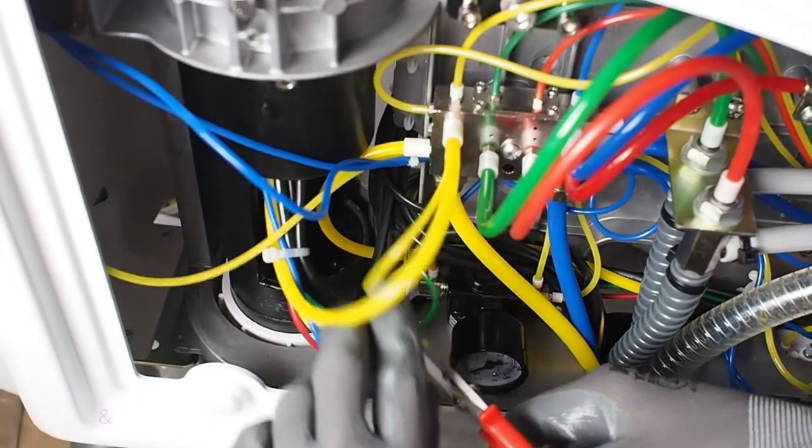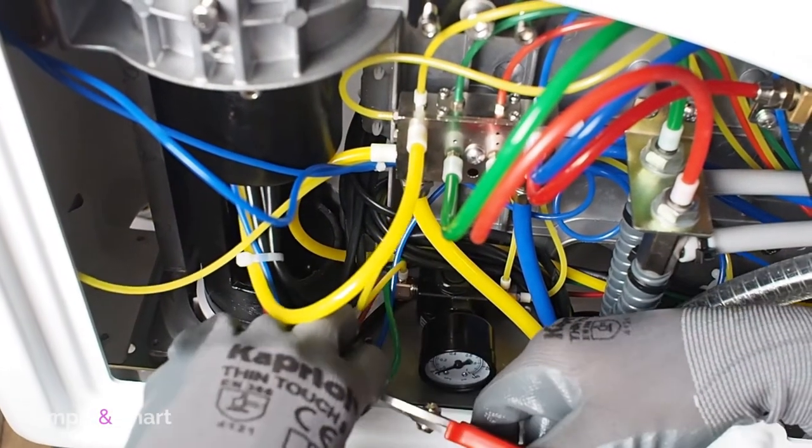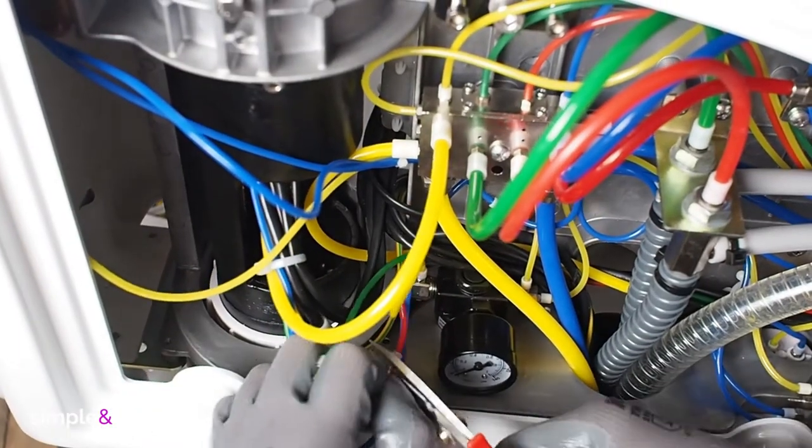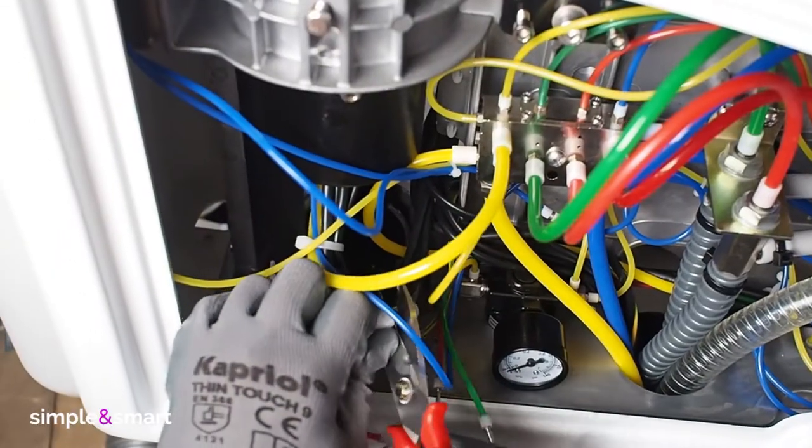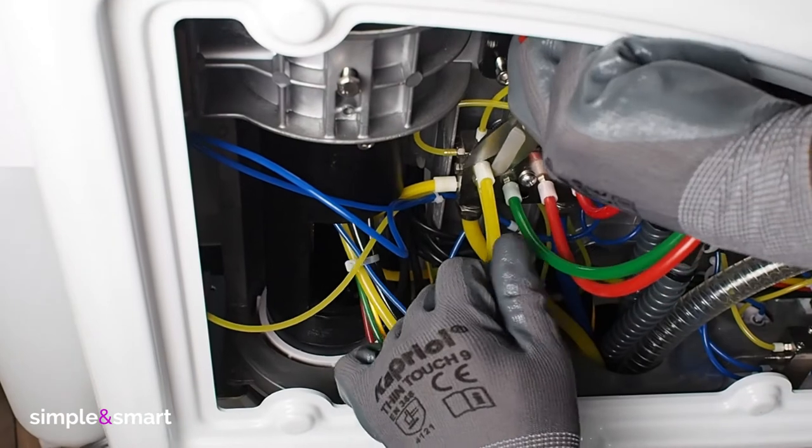All tubes and wires coming from the instrument tray must be disconnected. Start from the small tubes where they have junction. Disconnect the small green one, the red one, the blue one, the big black one, the yellow one on the metal separator.